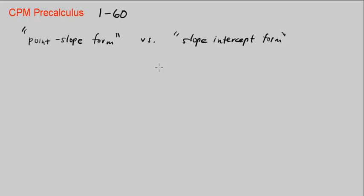This is CPM Pre-Calculus Chapter 1, Number 60. So this question is asking us, why is this called the point-slope form?